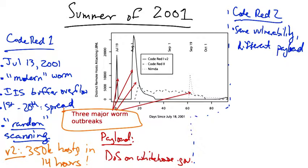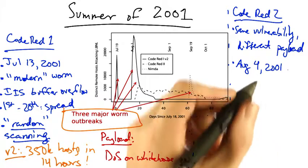Code Red 2 exploited the same vulnerability but had a completely different payload. It was released on August 4th, 2001, and was called Code Red 2 mainly because of a comment in the code. The worm actually only spread on Windows 2000.